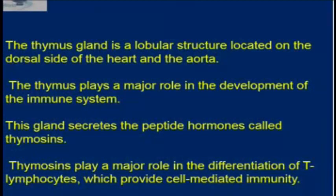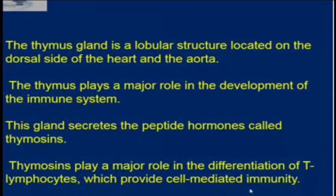Thymus produces a peptide hormone known as thymosin. Thymosin plays an important role in differentiation of T lymphocytes, and these cells produce cell-mediated immunity. Thymosin hormone also promotes the production of antibodies by providing humoral immunity. Thymosin plays a major role in differentiation of T lymphocytes, which provides cell-mediated immunity. Just remember that thymosin, which is a peptide hormone secreted by the thymus, plays a major role in differentiation of T lymphocytes and they provide cell-mediated immunity.